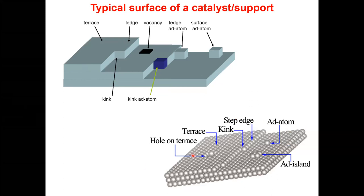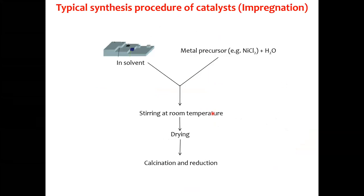For synthesizing a supported metal catalyst, you take the support in a solvent and add a metal precursor — for instance, nickel chloride. You mix them together in a solvent, do the stirring, drying, and finally the calcination. These steps are very important: stirring duration, concentration, and conditions all matter significantly.